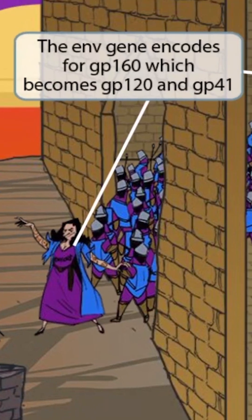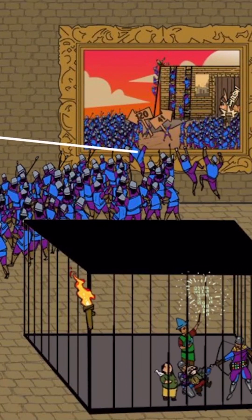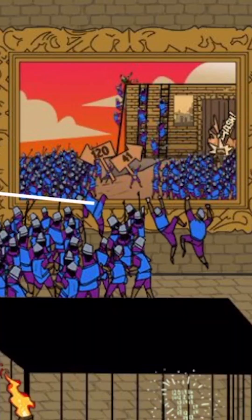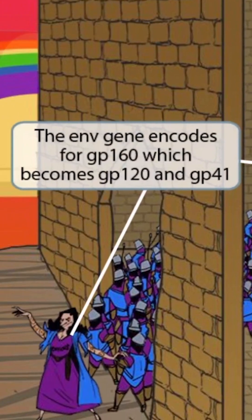The env gene encodes for GP160, which then becomes GP120 and GP41. To help you remember this, we've shown a large group of 160 soldiers moving away from the witch and then splitting into two groups inside of the mirror — a group of 120 soldiers and 41 soldiers. The largest group of approximately 160 soldiers represents GP160, the smaller group of 120 soldiers represents GP120, and the smallest group of 41 soldiers represents GP41. So the fact that the group of 160 soldiers is splitting into two smaller groups should help you remember that the env gene encodes for GP160, which then becomes GP120 and GP41.